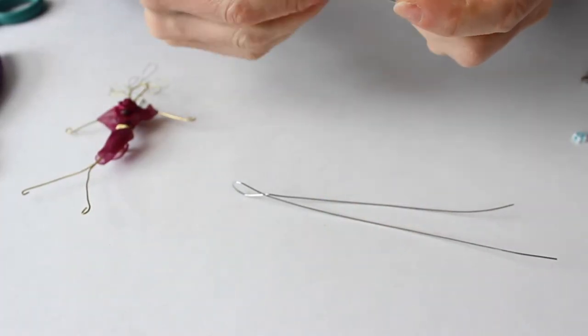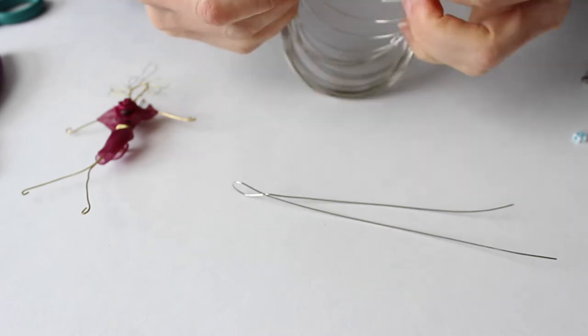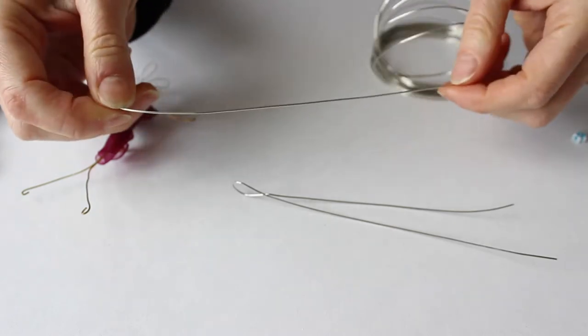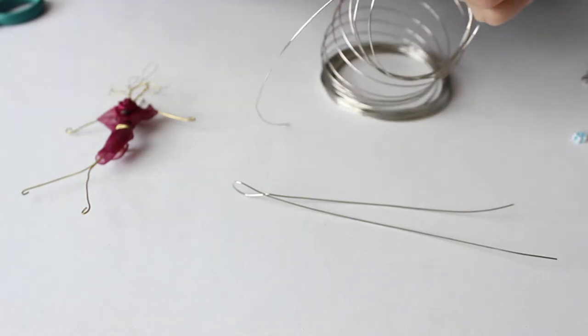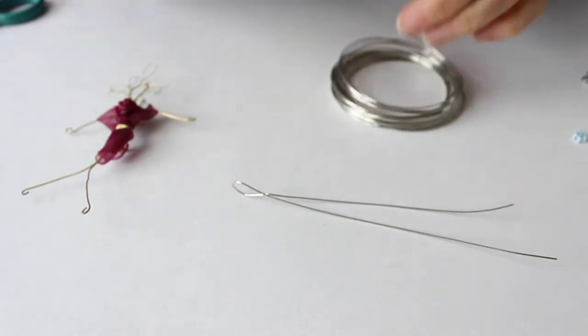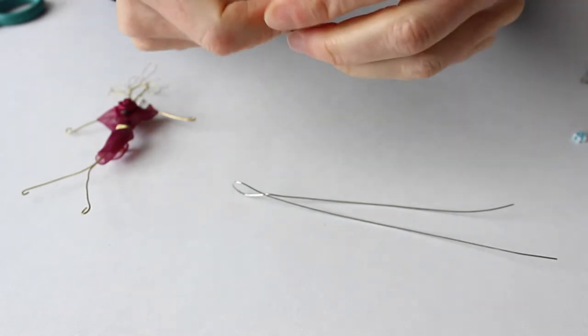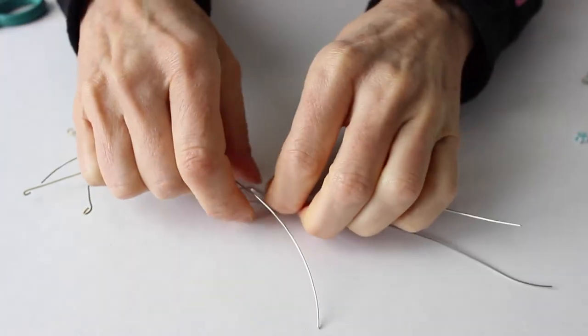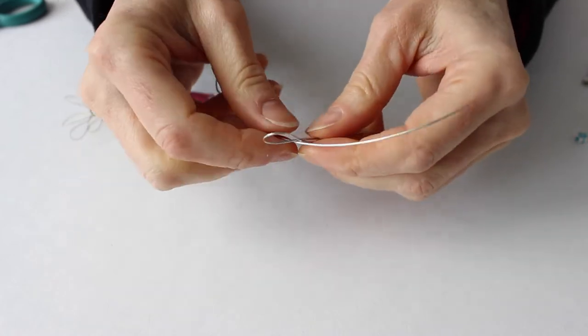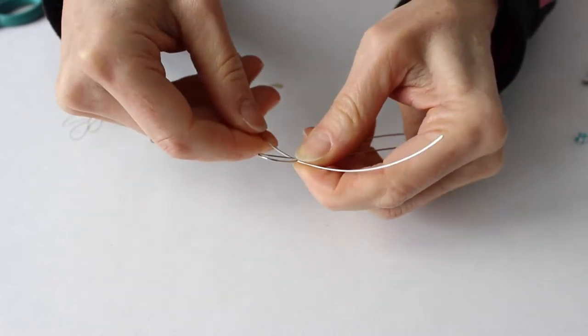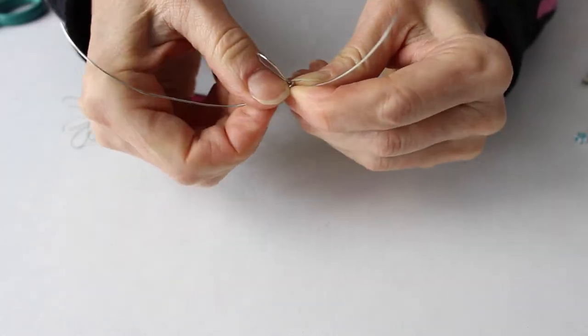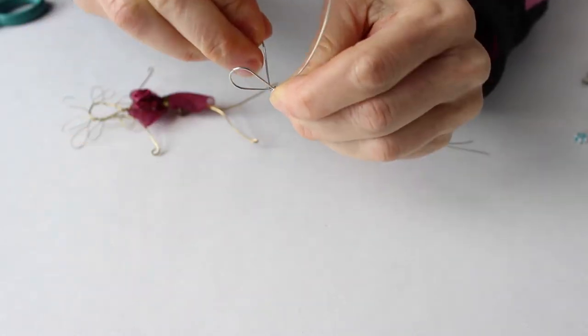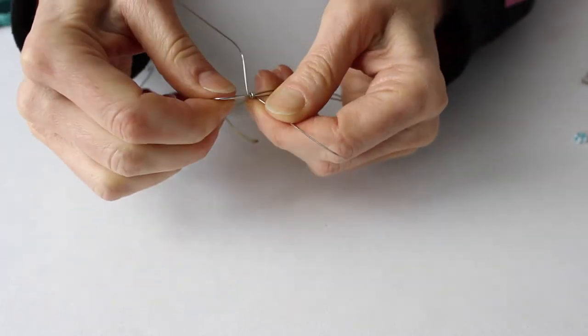For the arms we're going to cut another piece, and then what we want to do is twist it around the neck. We're just going to twist it around a couple of times like that.